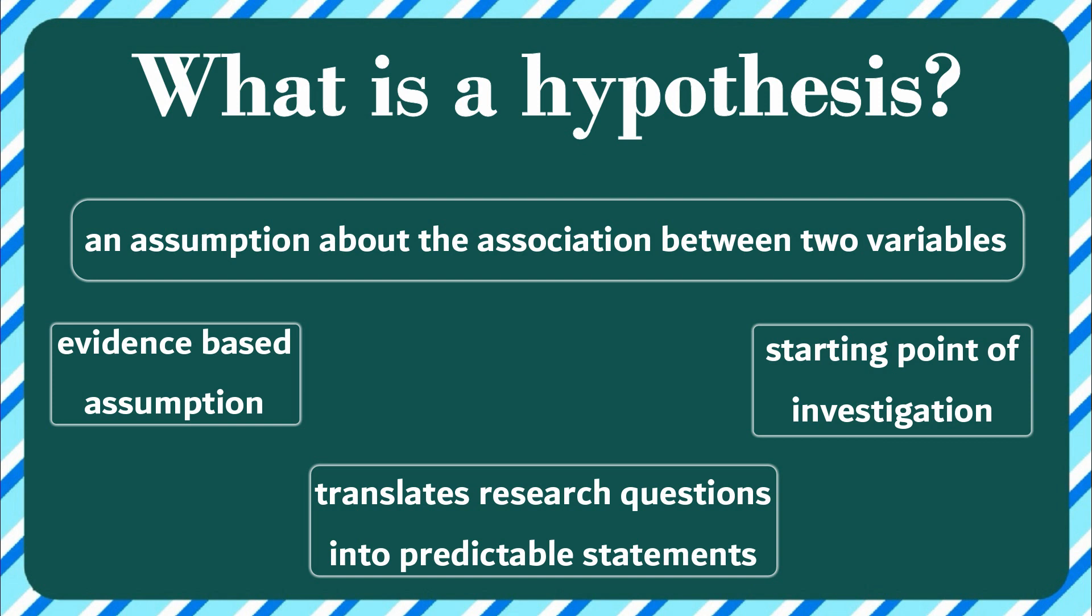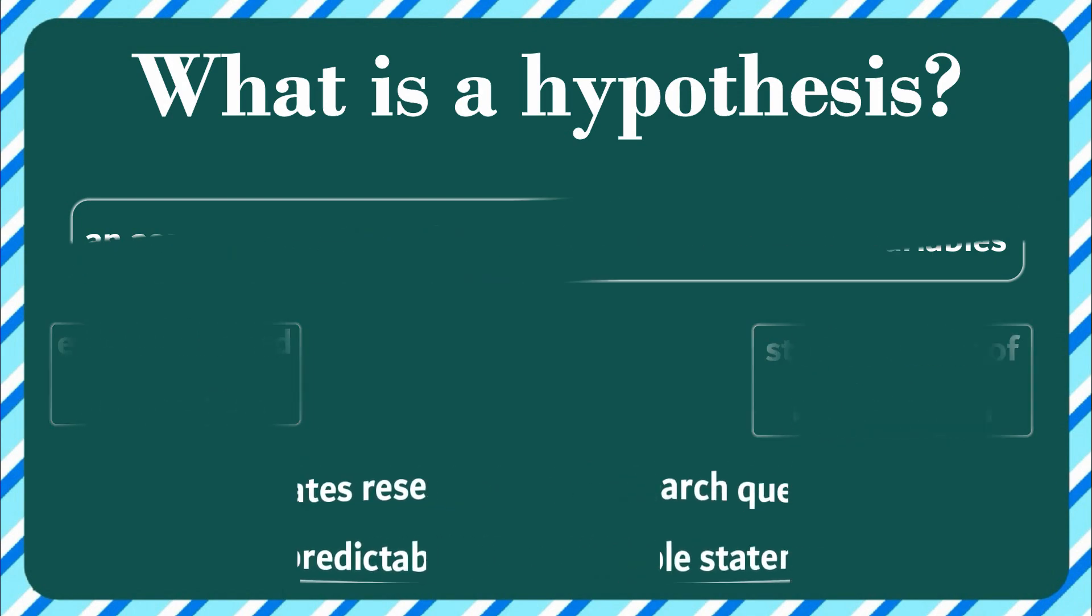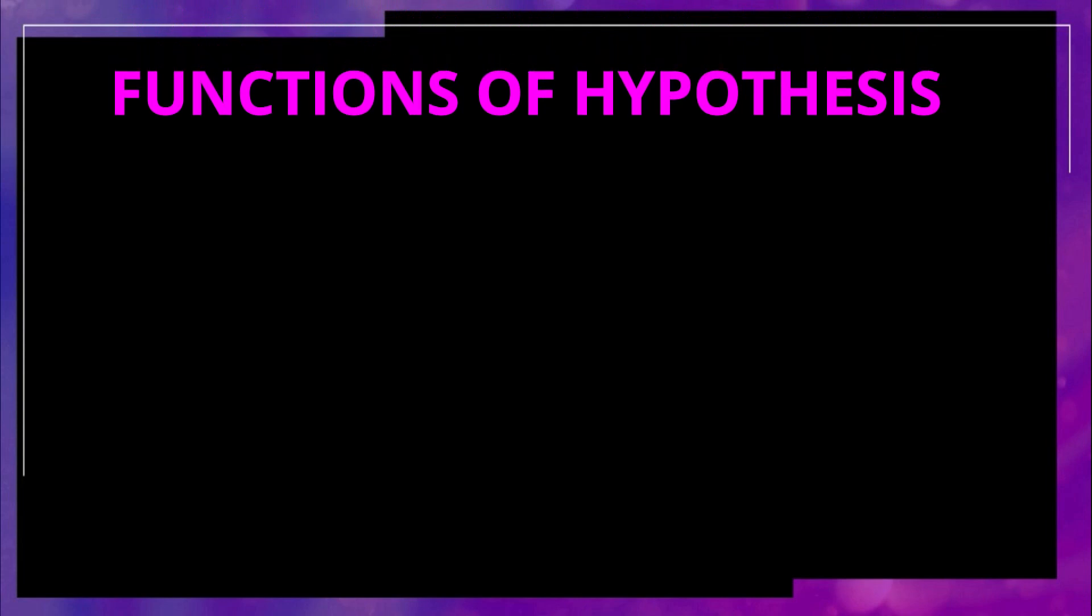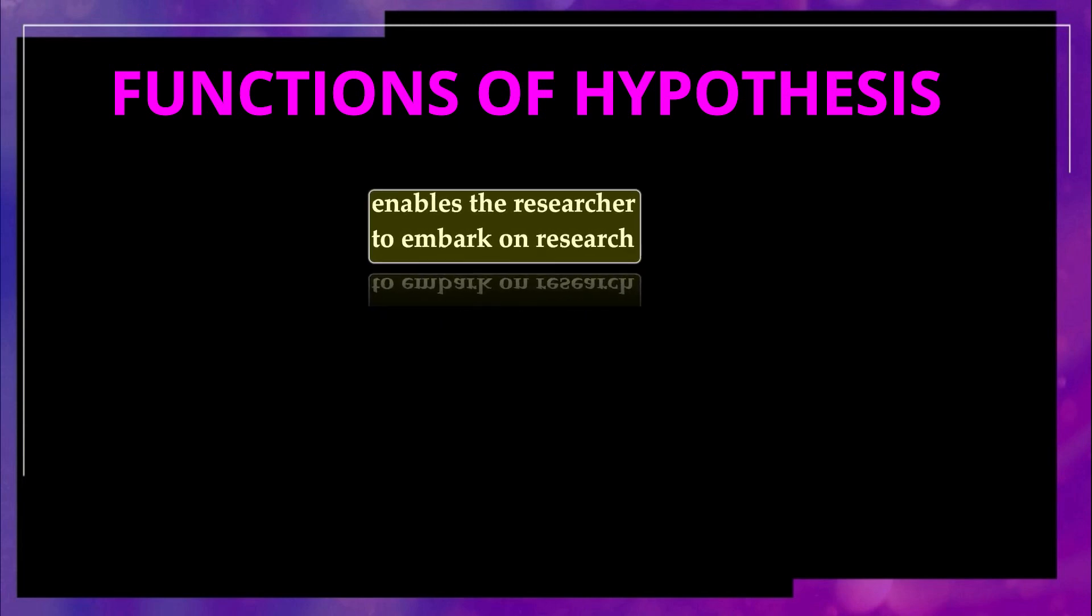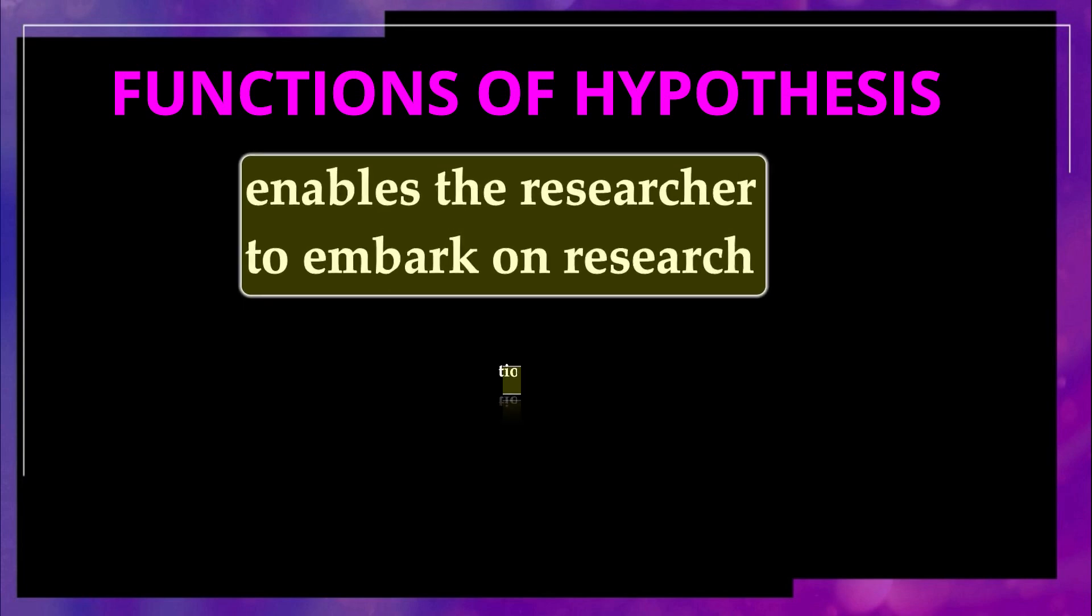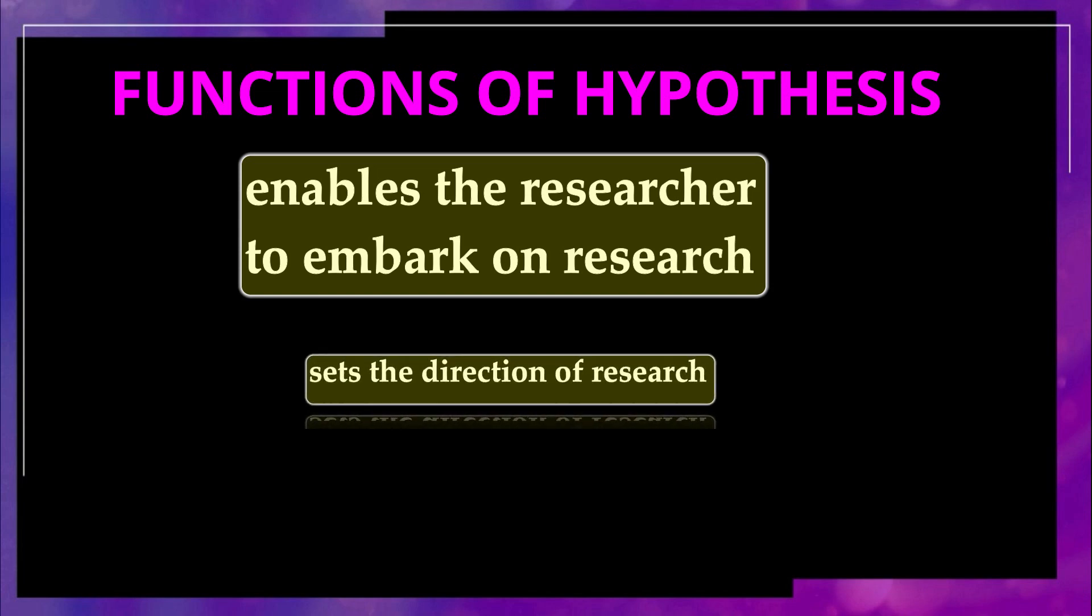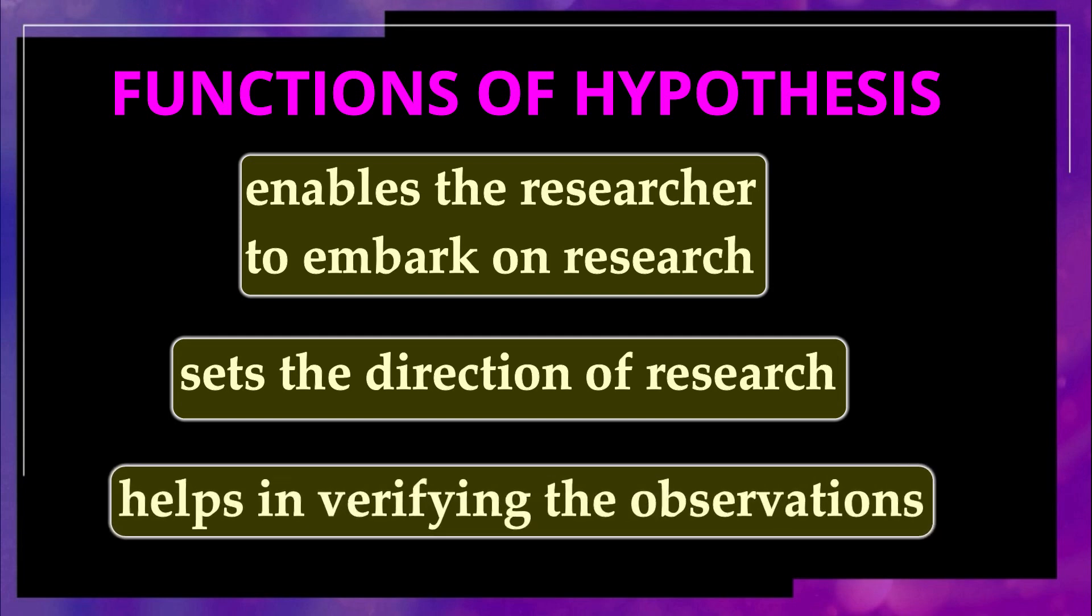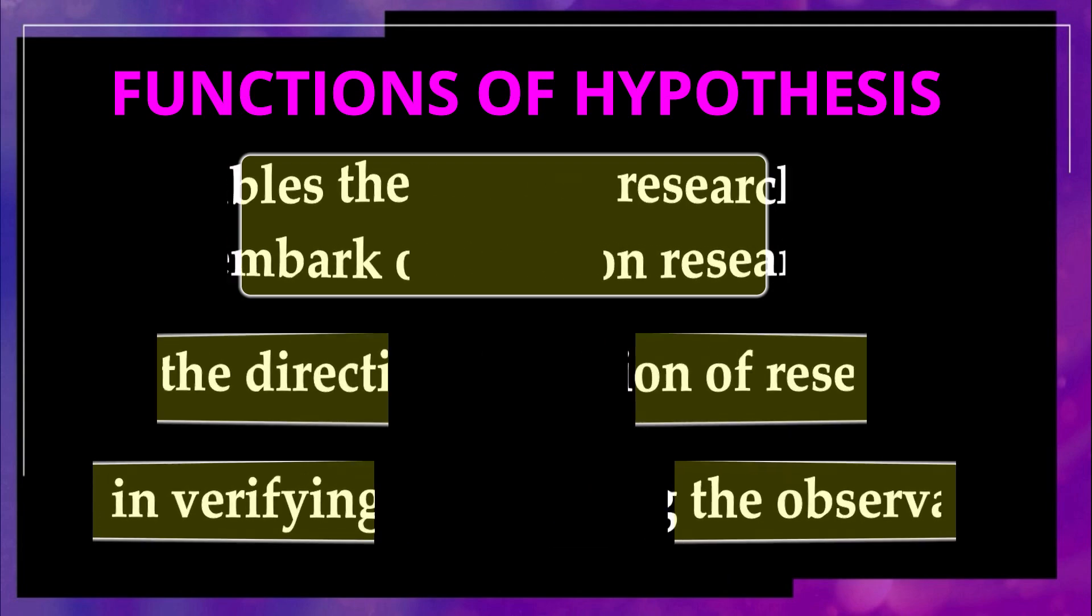A research hypothesis is a hypothesis that is used to test the relationship between two or more variables. Now what are the functions that a hypothesis performs? A hypothesis is the starting point of any research. Once you make some observations or conduct some literature review, you come across different variables. Now the time is to set the direction for your research. So the first major function of a hypothesis is that it helps in directing the inquiries in the right direction. Similarly, it is the starting point of any investigation. A hypothesis helps in verifying the observations.